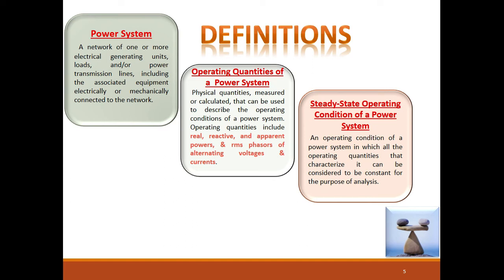Steady state operating conditions of the power system: initially our system is stable, meaning it is in a steady state operating condition, which is a state of equilibrium where load plus losses must equal the input. An operating condition of a power system in which all operating quantities that characterize it — voltage, current, frequency, active power, reactive power — can be considered to be constant for purpose of analysis. If there are no disturbances, the operating quantities of a power system remain constant, and that state is called the steady state operating condition.